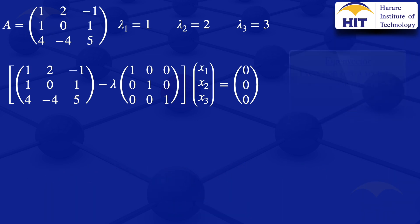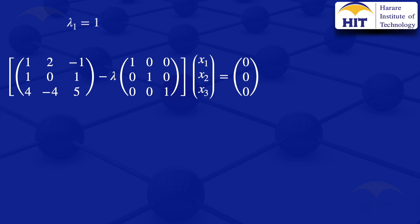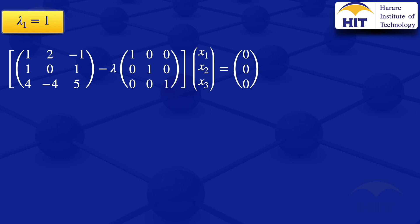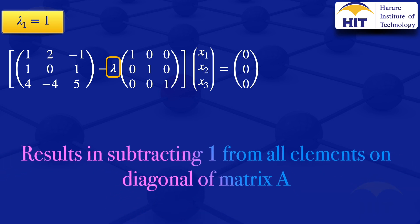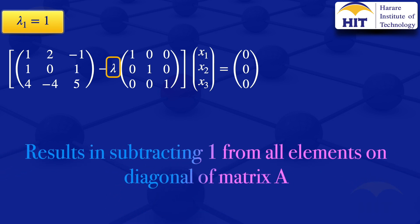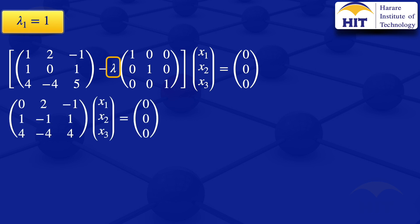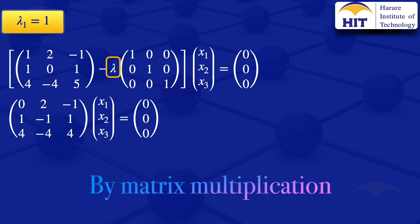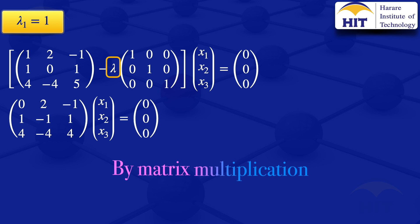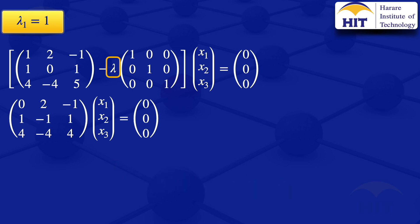We start with the first eigenvalue, lambda equals 1. Substituting 1 into the formula means subtracting 1 from all the elements on the diagonal of the original matrix A. This gives us the matrix: 0, 2, minus 1, 1, minus 1, 1, 4, minus 4, 4, multiplied by the column vector x equals the zero vector. By matrix multiplication, row by column, the first row gives us: 0·x1 + 2·x2 minus 1·x3, which equals 0.